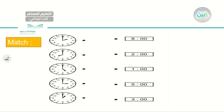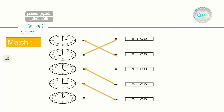Let's match. To your left I have 8, 2, 1, 5, and 3, with the clocks. Starting with the first one: it's 2 o'clock. For the next one: it is 8 o'clock. Then: it is 5 o'clock. Then: it's 3 o'clock. And: it is 1 o'clock.